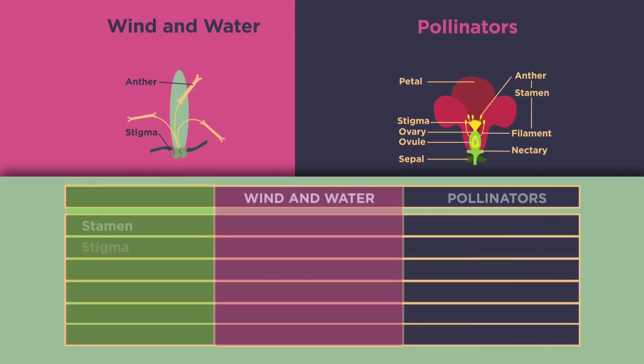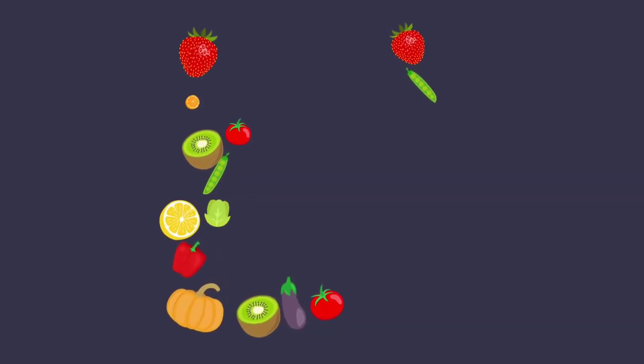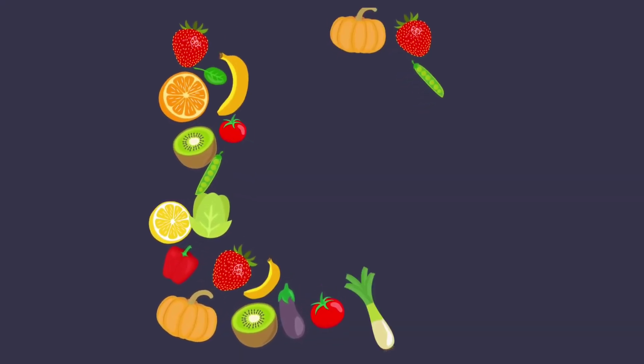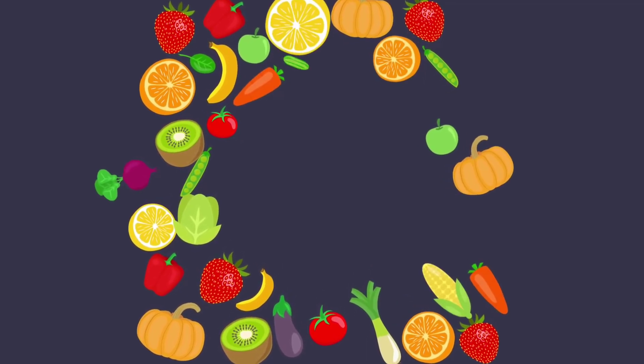Flowers pollinated by pollinators are more attractive and bright in color because they are meant to attract pollinators like insects and birds so that pollination can take place.